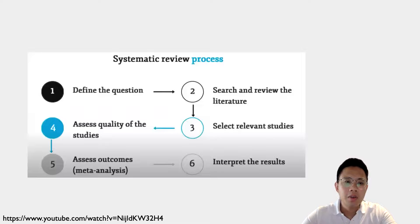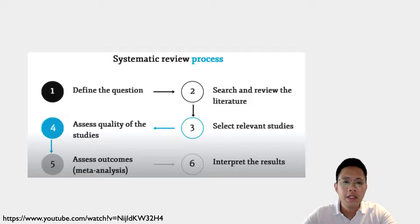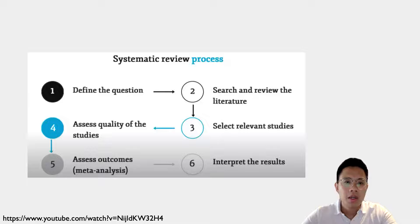The systematic review involves the following steps. First, a clear technical question has to be defined. The research is then reviewed and relevant studies are extracted, following which the quality of the studies are reviewed and the outcomes are assessed, typically in the fashion of a meta-analysis, and then the results are interpreted. Along the way at the different steps, there are usually at least two individuals involved in the process, and this helps to ensure that the process is reproducible.